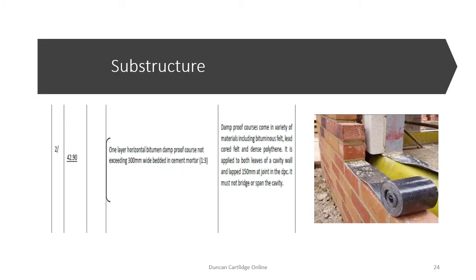A damp proof course or DPC is required for both skins or leaves of the external wall. Bitumen damp proof course is supplied in rolls 30 metres long. At the junction of the rolls, the damp proof course is lapped 150mm. But when taking off quantities, this is not taken into account and the DPC is measured net. Once again, the estimator should make an allowance for this when pricing the bill.